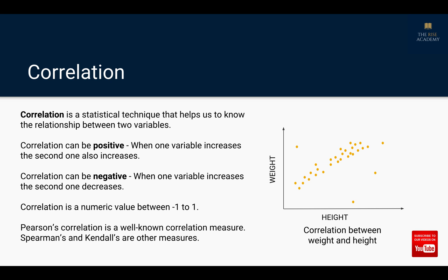Correlation is a statistical technique that helps us to know the relationship between two variables. Correlation can be positive — that is when one variable increases the second one also increases — or correlation can be negative, that is when one variable increases the second one decreases. Correlation is generally a numeric continuous value that is between minus 1 to 1.